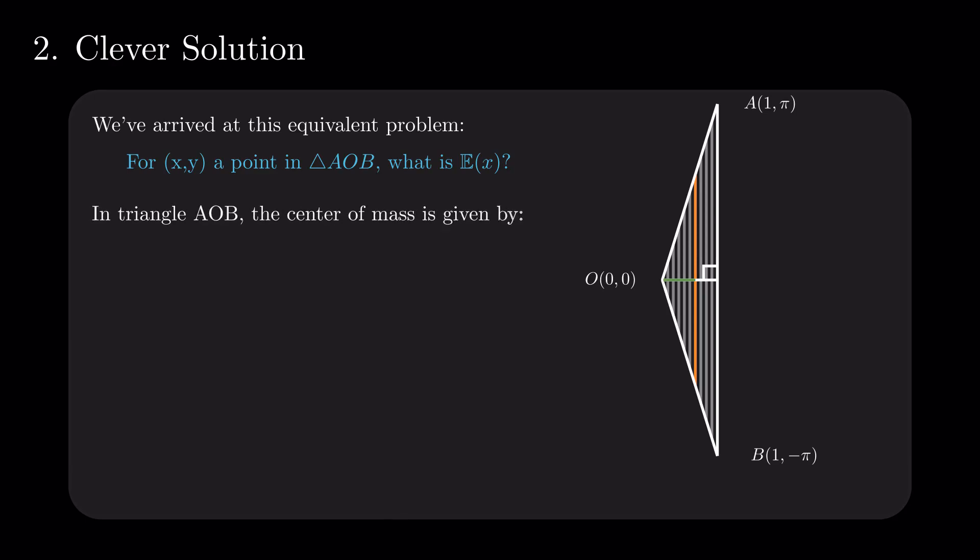We find the coordinates of the center of mass to be 2 divided by 3 and 0. So, this means that the expected x coordinate is 2 thirds, which further solidifies the previous result.